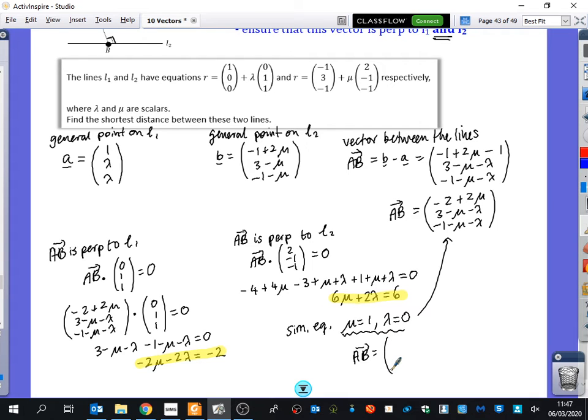So AB, anywhere there's a mu, it's going to be a 1. So that's just going to be 0, 2, minus 2. So the shortest distance is the magnitude of that, which is the square root of 2 squared plus 2 squared. Root 32.